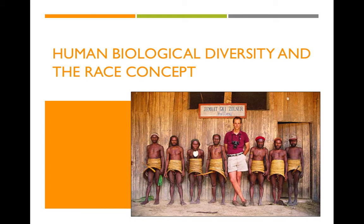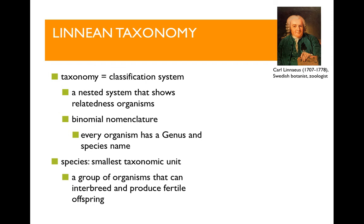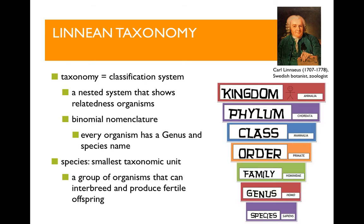To start thinking about this question, let's do a little biology review. In the biological sciences, we use what's called the Linnaean taxonomy. Taxonomy is just a way of classifying things, sorting them into groups according to similarity. The Linnaean taxonomy is named after Carl Linnaeus, a Swedish botanist and zoologist, who developed the system we still use today. In this taxonomy, related organisms sit within a nested organization system where kingdom is the largest group, and then the groups within that get smaller, with plants or animals in those groups sharing more specific characteristics.